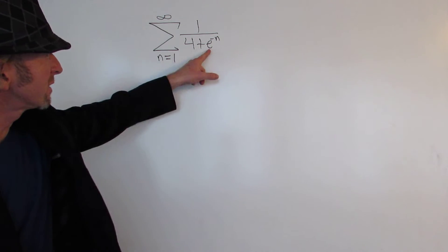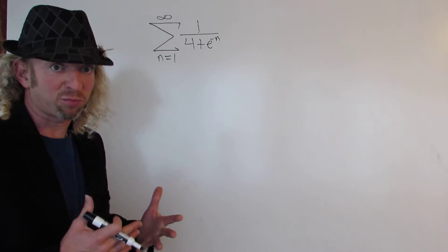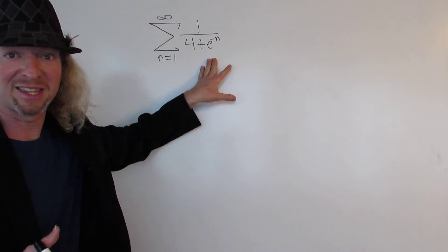So the first thing you might notice that's kind of uncomfortable is the e to the negative n. So when I first see this problem, I'm thinking we need to fix that. That's too hard to think about.